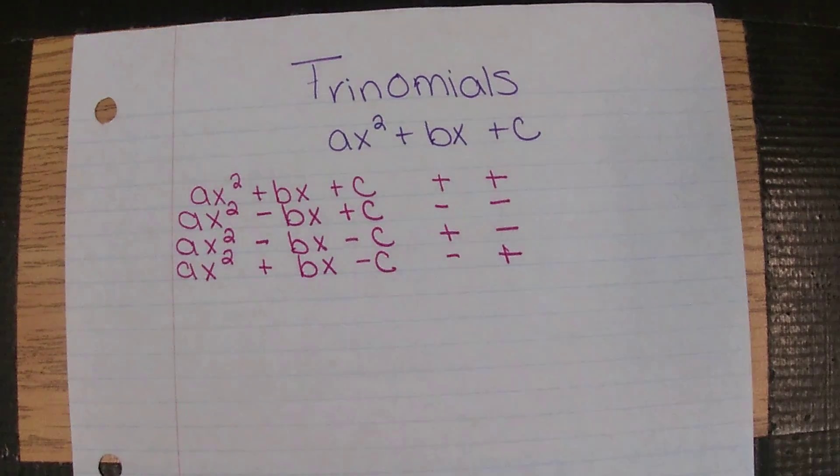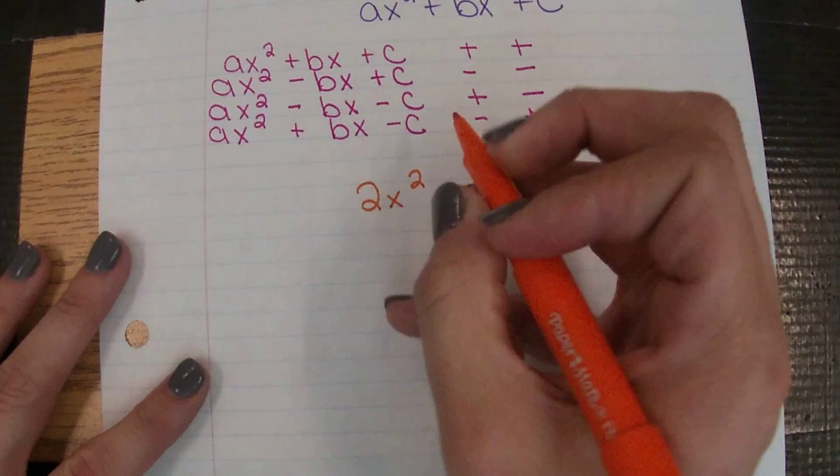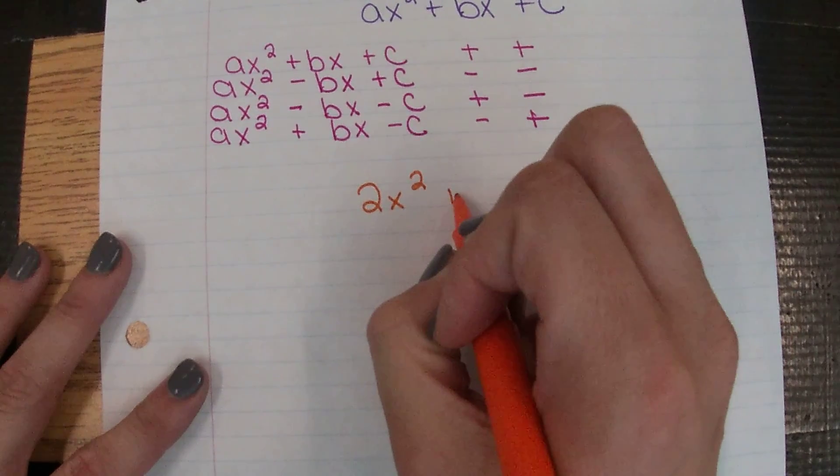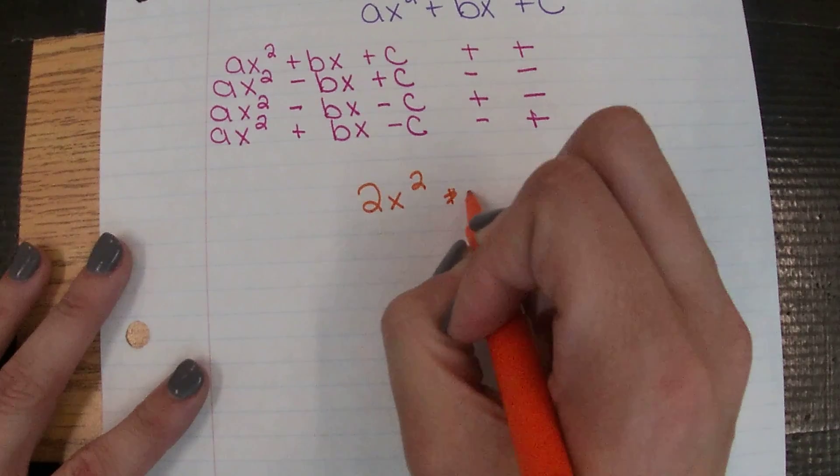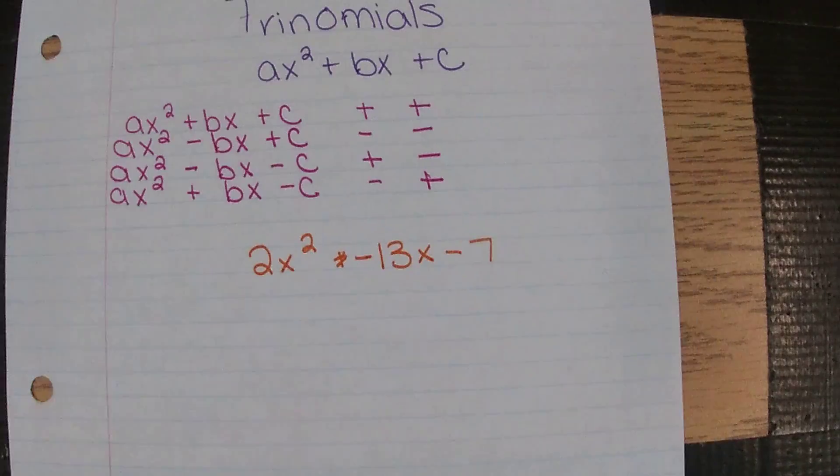So let's say we are asked to factor 2x² - 13x - 7.